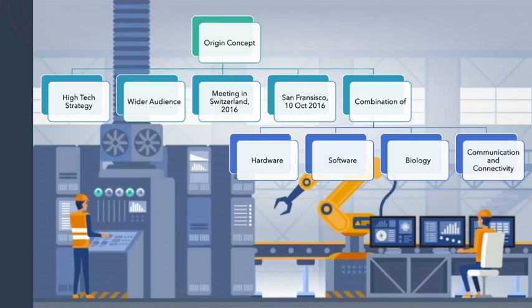Now the Origin Concept. It was first introduced by a team of German scientists developing a high-tech strategy for the German government. It got a wider audience when Klaus Schwab, Executive Chairman of the World Economy Forum, introduced his article in 2015. Mastering the Fourth Industrial Revolution was the 2016 theme of the World Economy Forum Annual Meeting in Switzerland. On October 10, 2016, the Forum announced the opening of its Center for the Fourth Industrial Revolution in San Francisco.